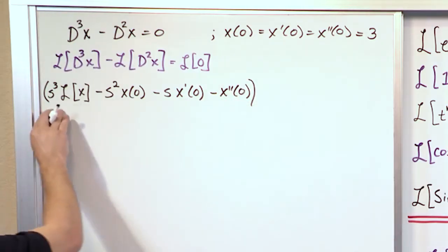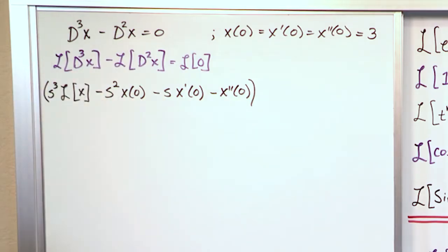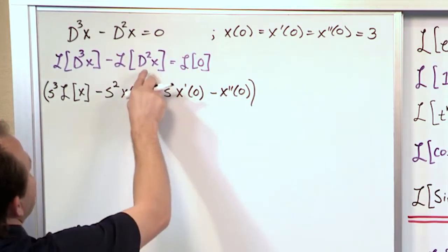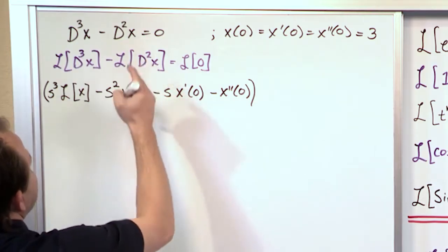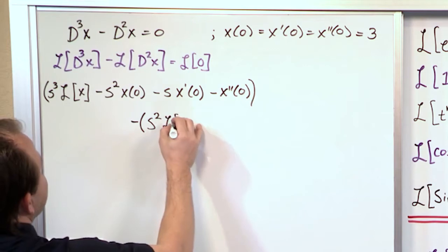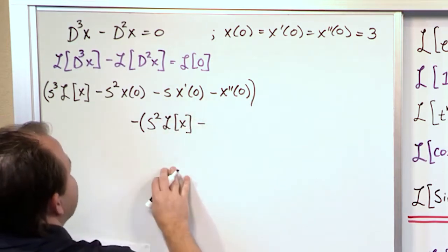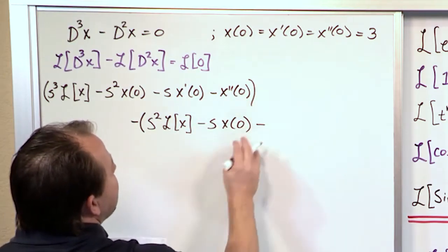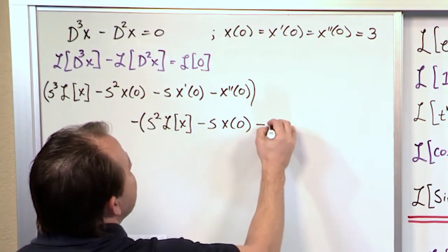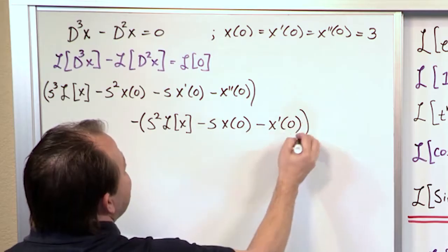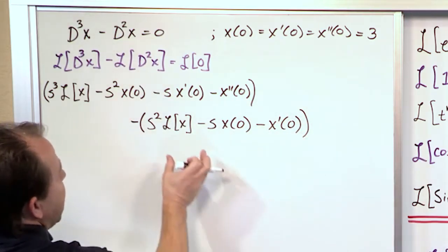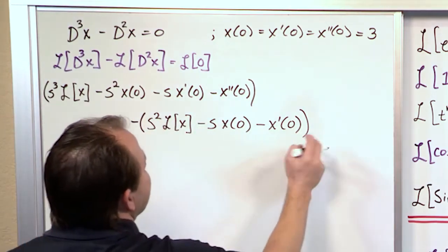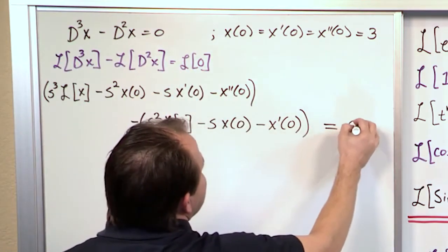All of this comes from the third derivative term. Now for the second derivative term, because it's a second derivative you'll have S² times the Laplace Transform of X, then you subtract S times x(0), then you go down another power of S which disappears, and then you have the first derivative term. As you go down in powers of S, you go up in derivatives. The right-hand side is the Laplace Transform of 0, which equals 0, since we're integrating e^(-st) times 0 from 0 to infinity.